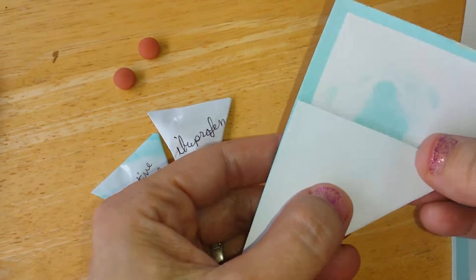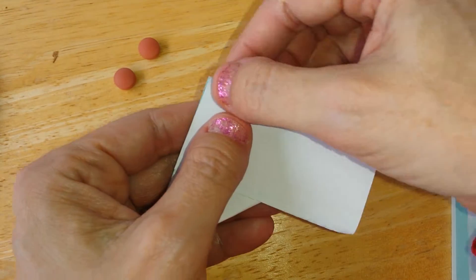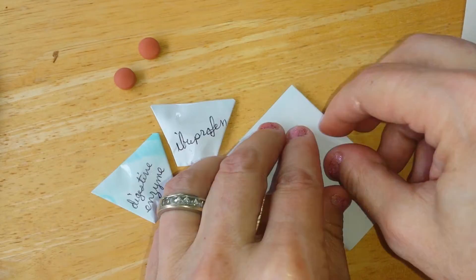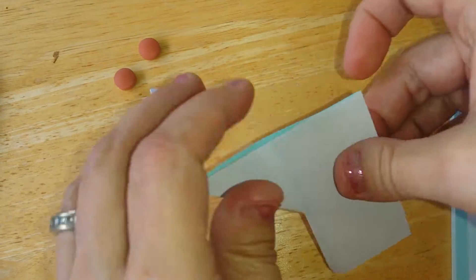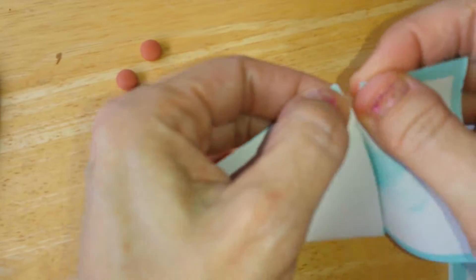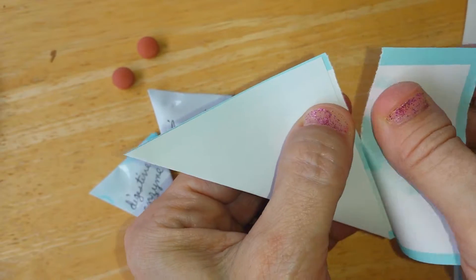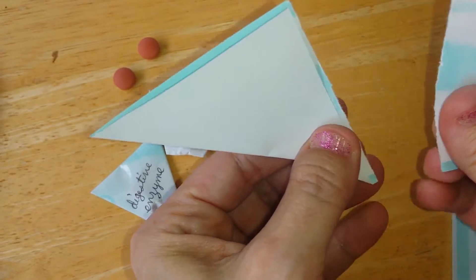And now I'm going to fold this piece down and I'm going to score it. And now that I have scored it, I should be able to pull this off. It doesn't have to be perfect.